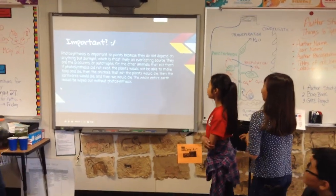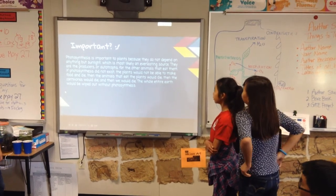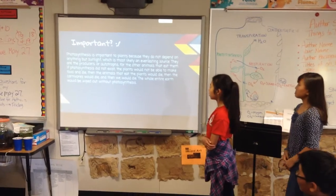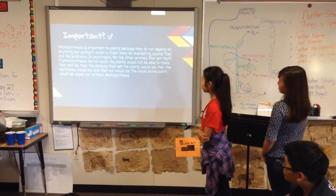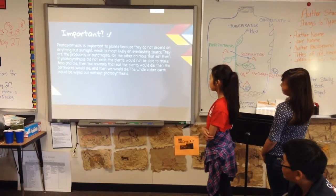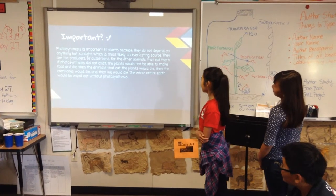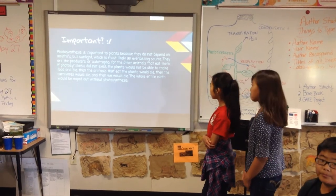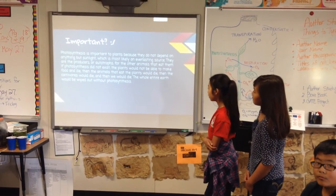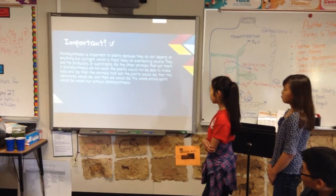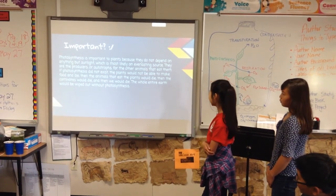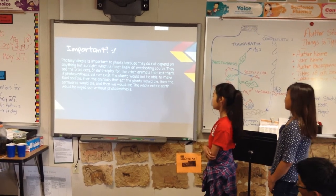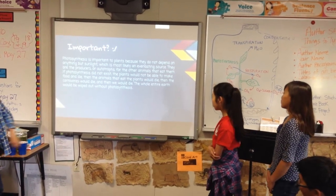Photosynthesis is important to plants because they depend on nothing but sunlight, which is most likely an everlasting source. They are the producers, or autotrophs, for the other animals that eat them. If photosynthesis did not exist, the plants would not be able to make food and would die. Then the animals that eat the plants would die, then the carnivores would die, and then we would die. The whole entire earth would be wiped out without photosynthesis.